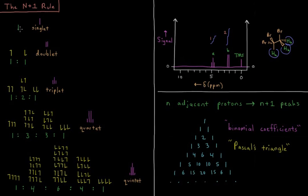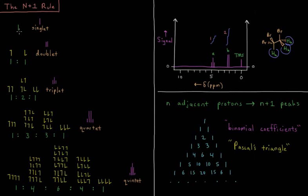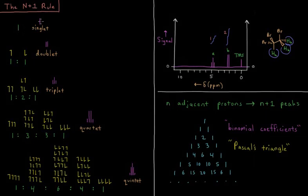We'll start with the simplest case. That's going to be a proton that doesn't have any coupling with any other nuclei. So that's what's called a singlet. We just have a single peak that goes up and goes back down, called a singlet.